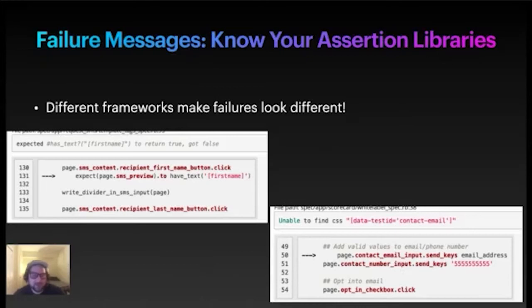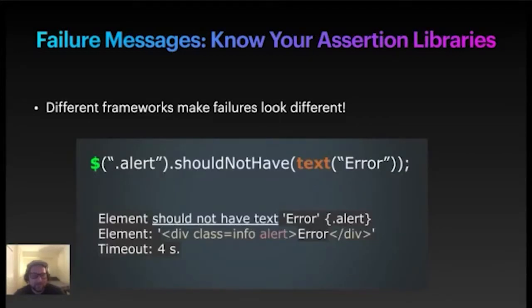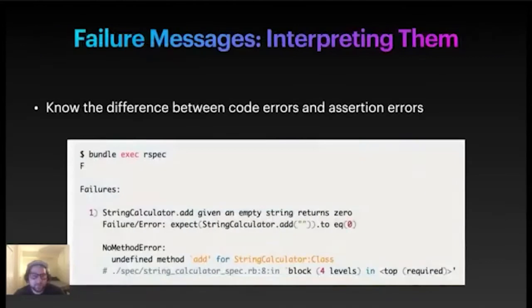Tests can be complicated — you have a framework, you have Selenium, you have an assertion library, and all these different things can raise different assertion failures. So be familiar with not only your testing framework assertion errors, but also the custom ones that your Selenium framework can put forth. This is another one from a Java testing package — it looks like this gives you a little snippet of the HTML, which is pretty cool. An additional thing to be aware of is knowing the difference between code errors and assertion errors. For example, this is a "no method" error, which is different from the assertion error.